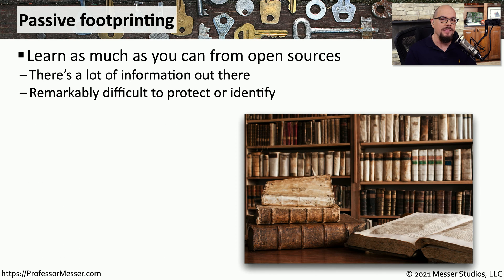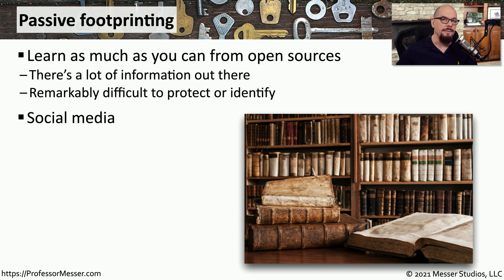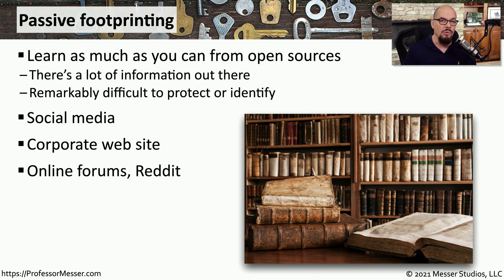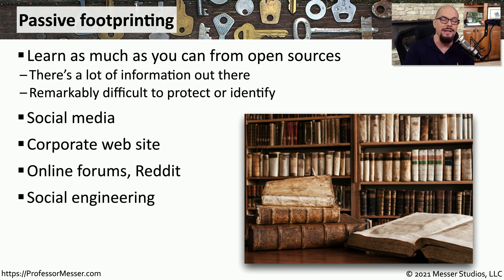A good place to start would be to gather information in a way that would not be seen by the victim. This is a passive footprint — a way to use data located in open source areas to understand more about the systems you'll be attacking. Examples include looking at social media pages or the corporate website to gather details about the network. Online forums and subreddits may also contain useful information, and you may be able to perform some social engineering by calling directly into the organization. You could also dive into the dumpsters around back and look through their trash for details.